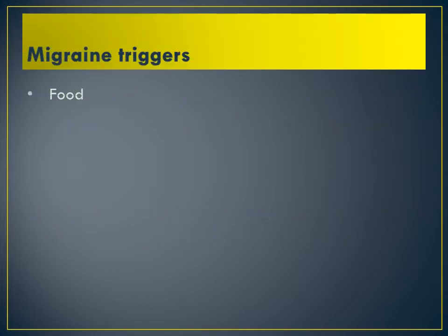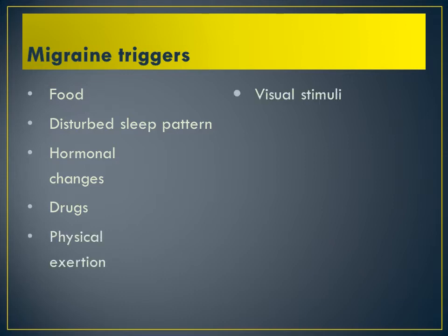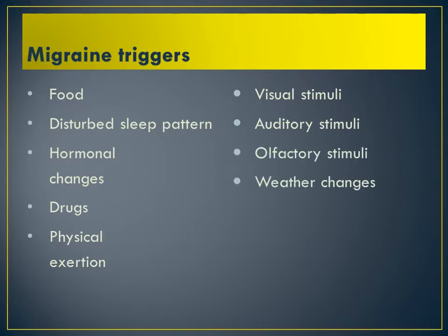There are triggers which can trigger migraine, such as some food components, disturbed sleep pattern, hunger, and foods containing neurotransmitters like serotonin. Other triggers include hormonal changes, some drugs, physical exertion, visual stimuli, auditory stimuli, olfactory stimuli, weather changes, hunger, and psychological factors.